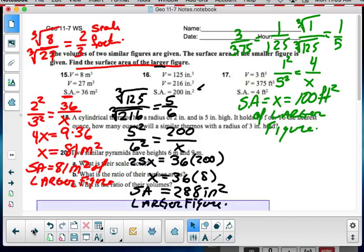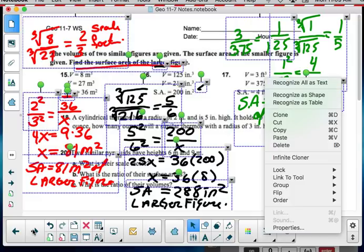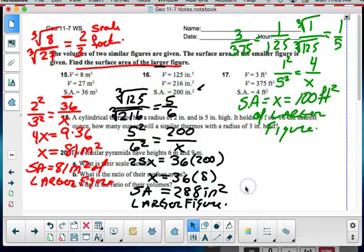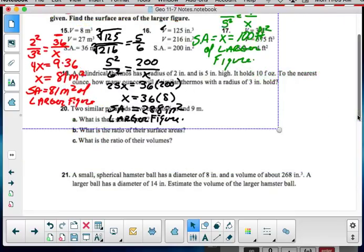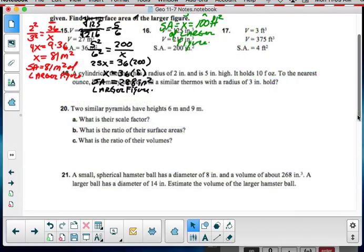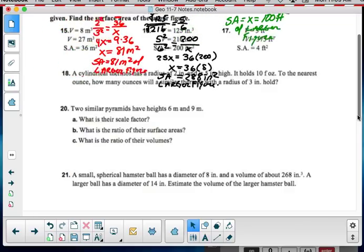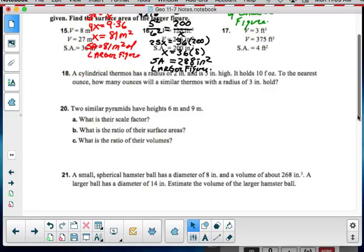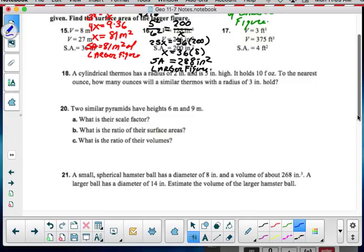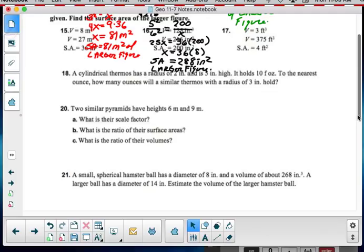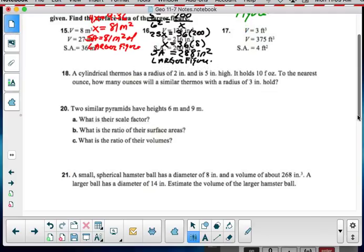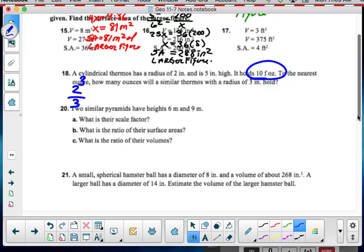I hope you notice the theme on all of those when we're doing them. I'm going to group them all together. We're going to get them shrinky-dinked. And we're going to put them over. So, that way, I can have room in the other ones. A cylindrical thermos has a radius of 2 inches, and 3, a 5 inch high. And it's 5 inch high. It holds 10 fluid ounces. To the nearest ounce. How many ounces with a similar thermos with a radius of 3? Well, the ratio I'm working with is 2 to 3. And I'm thinking about volume because it's fluid ounces. So, I'm going to cube these.